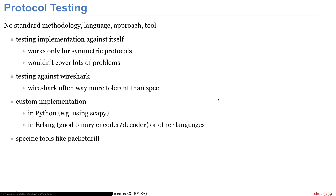Der einfachste Weg ist natürlich, wenn das symmetrische Protokolle sind, die Implementation gegen sich selbst zu testen. Das ist aber leider nicht sonderlich gut, wenn man einen Fehler in der Implementation hat, weil dann funktioniert es zwar, aber es spricht mit niemandem anders. Das ist uns in Osmocom auch öfter passiert – es funktioniert prima, solange man beide Elemente selbst geschrieben und beide Male genau gleich falsch gedacht hat.